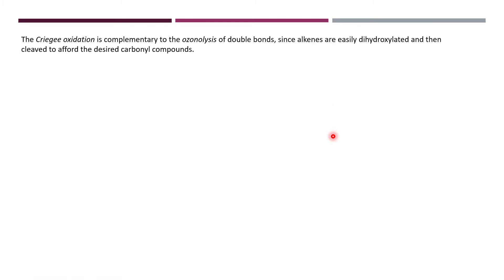This oxidation is complementary to the ozonolysis of double bonds, since alkenes are easily dihydroxylated and one can obtain the desired carbonyl compounds from this approach.